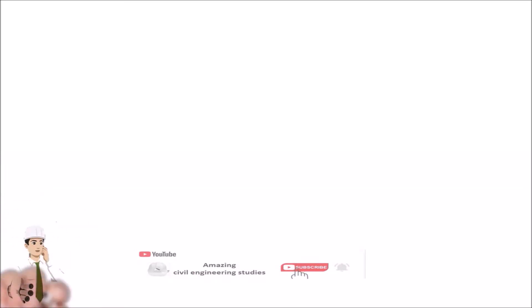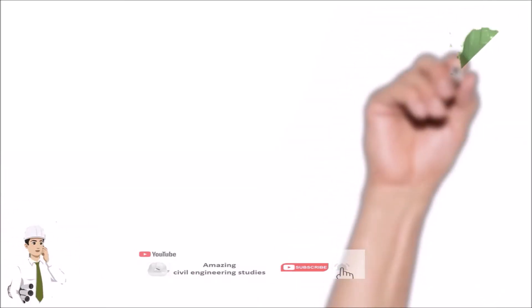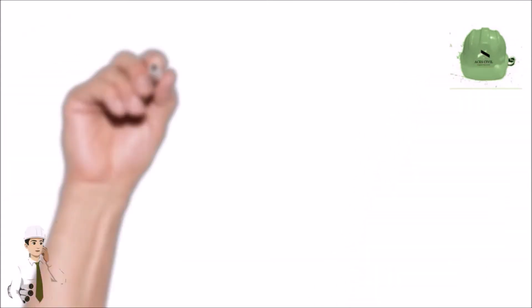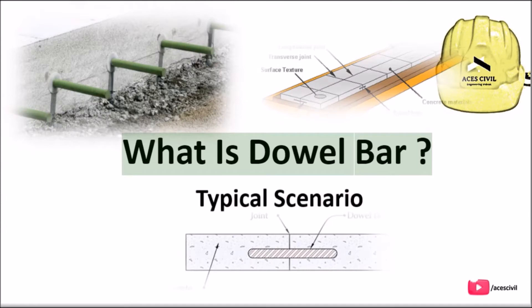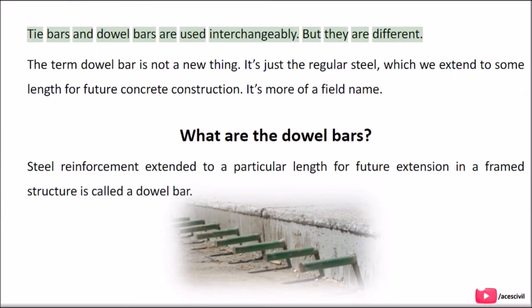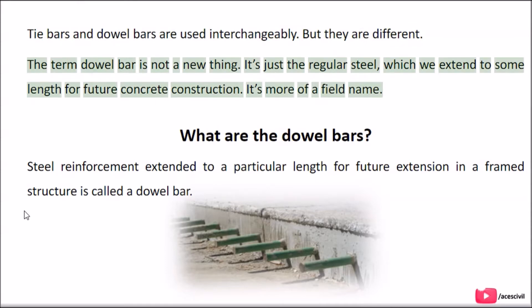Hello viewers, welcome to the channel Amazing Civil Engineering Studies. In today's video we are going to discuss what is a dowel bar. Tie bars and dowel bars are used interchangeably, but they are different. The term dowel bar is not a new thing — it's just the regular steel which we extend to some length for future concrete construction. It's more of a field name.